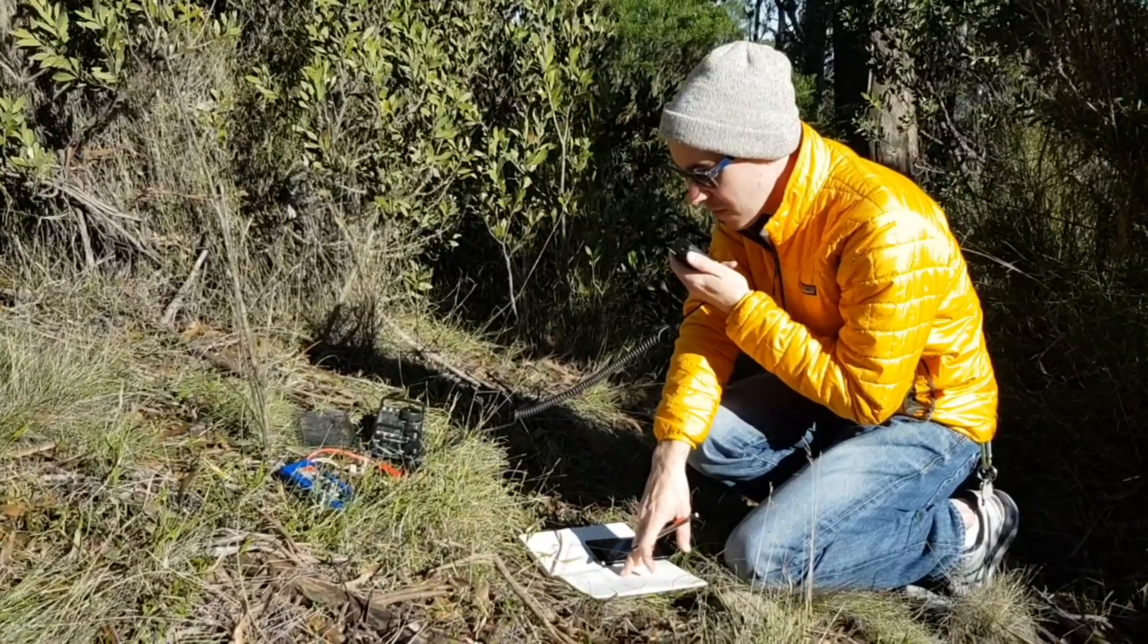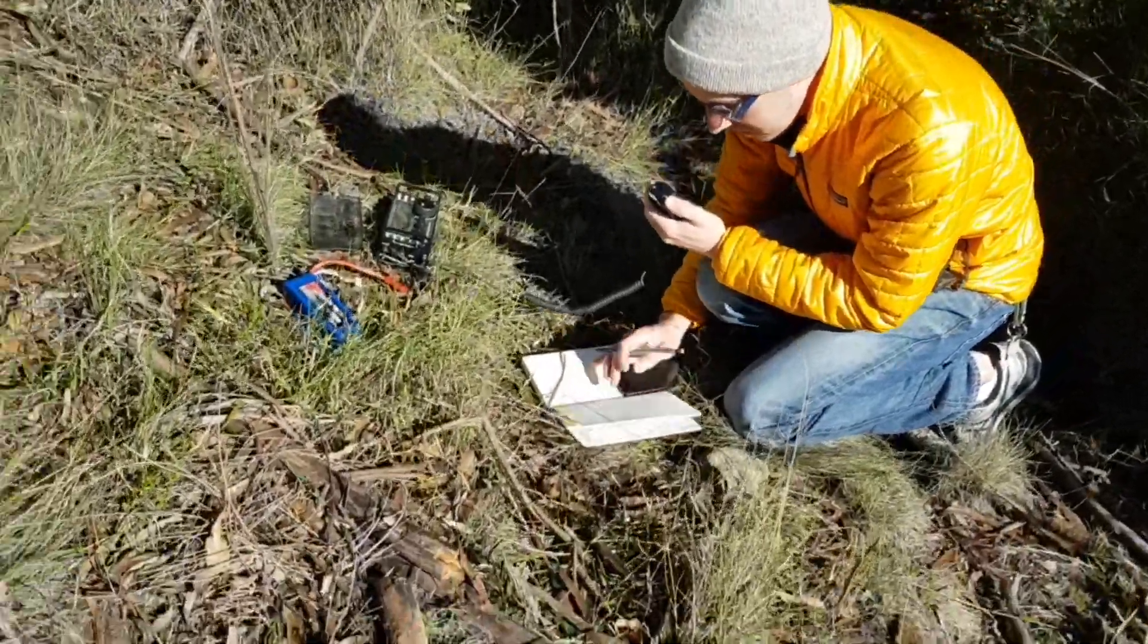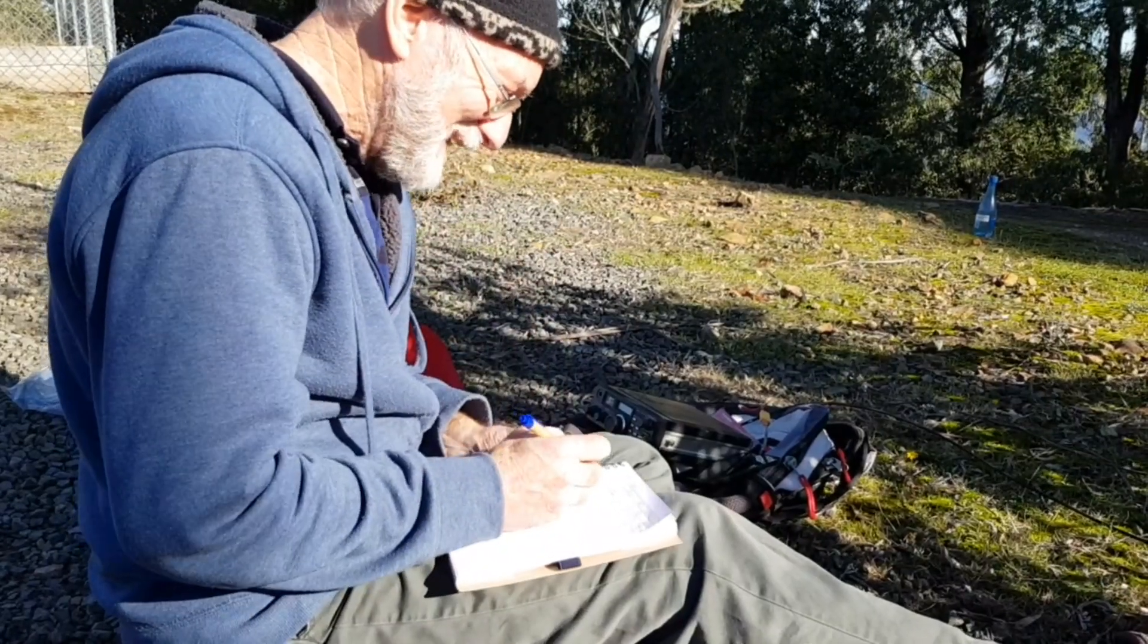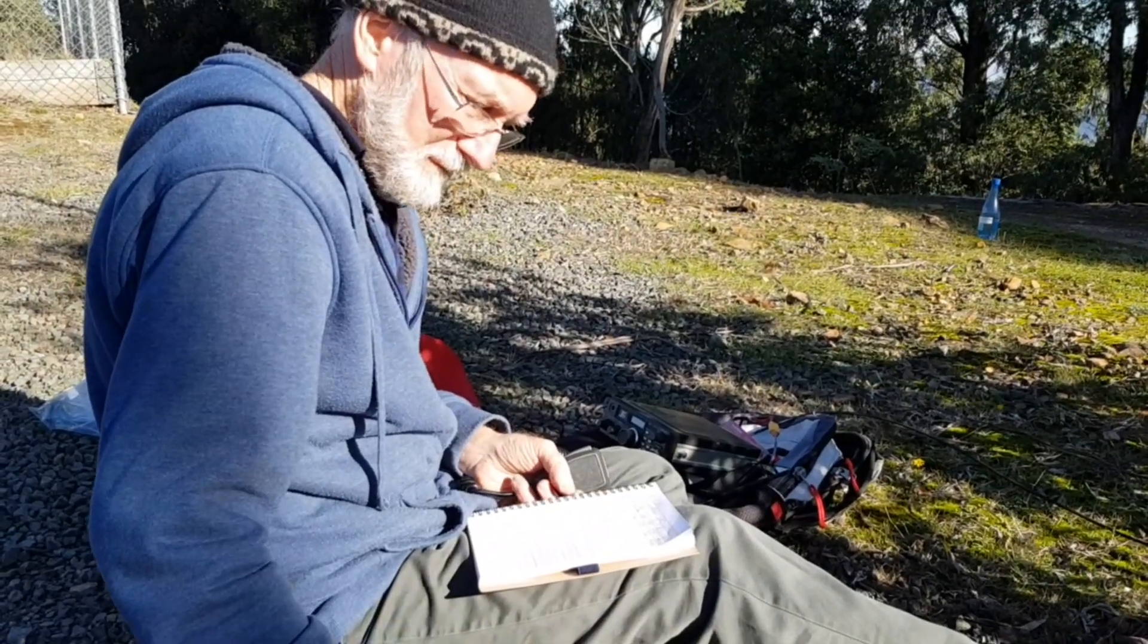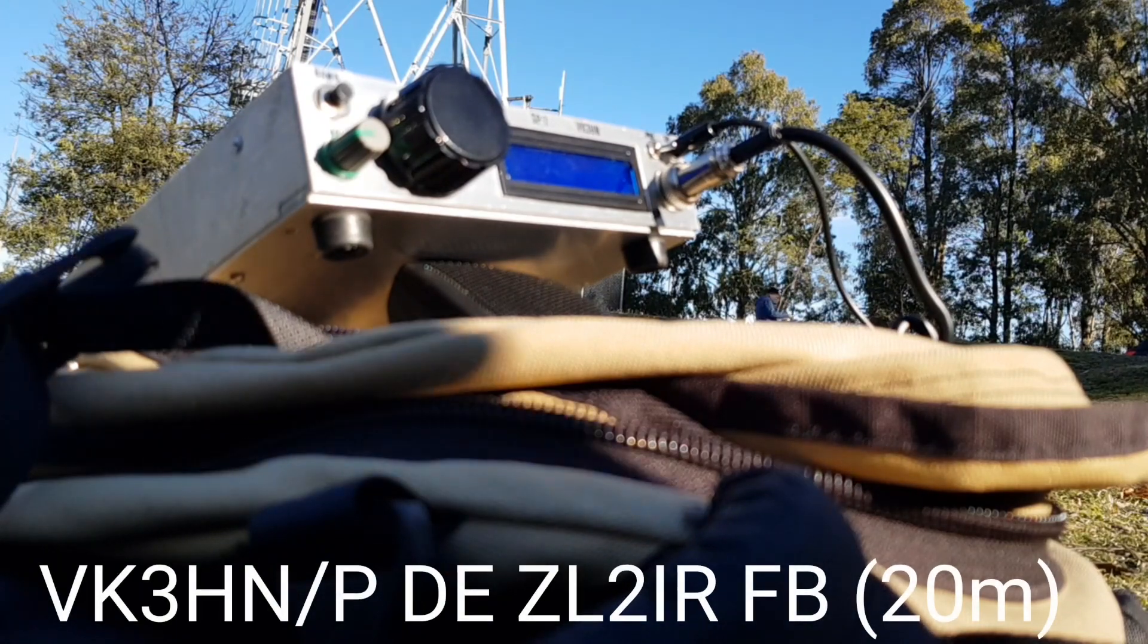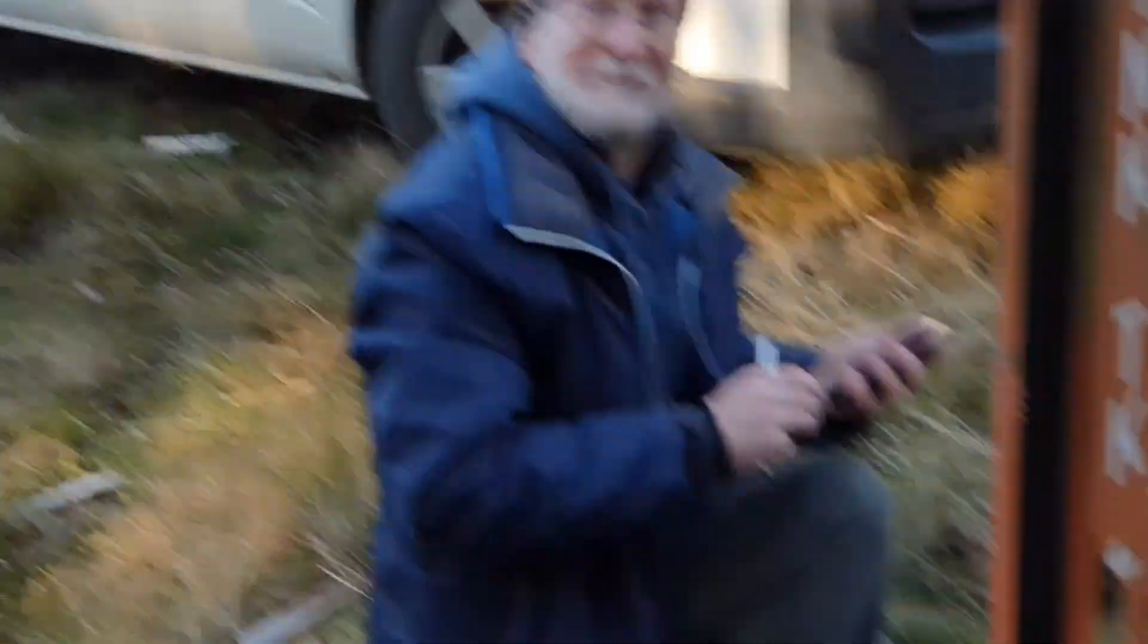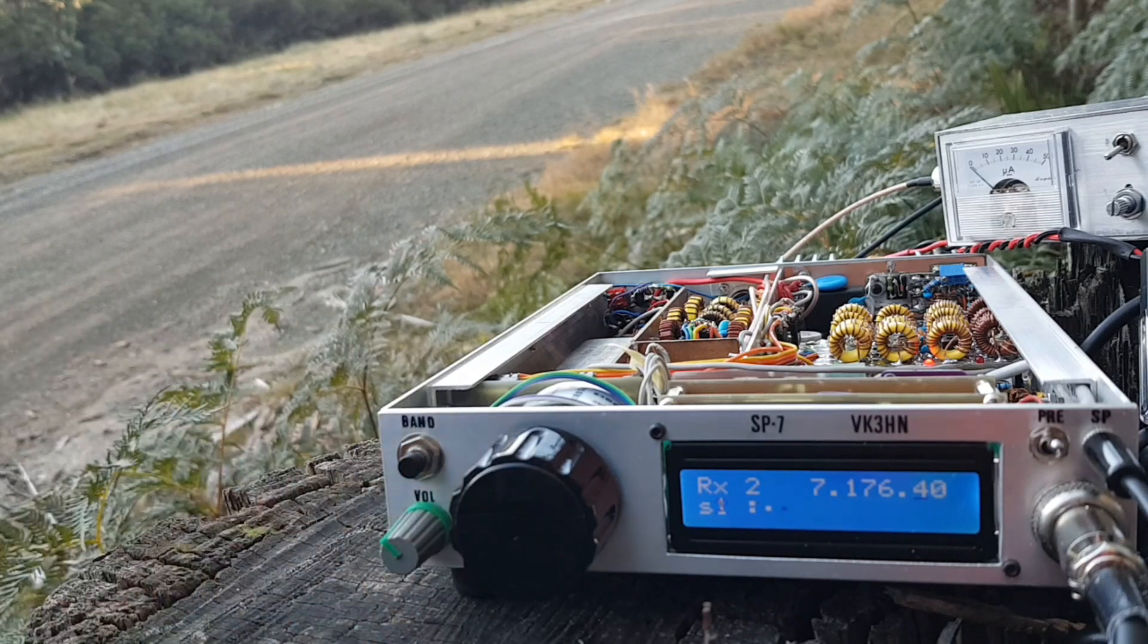VK5 Papa Alpha Sierra, this is VK3 Echo Alpha Romeo. You're five and nine plus some. Very good morning to you. VK3 Delta Alpha Romeo portable. VK5 Echo Alpha Sierra. VK3 Kilo Romeo. VK3 Papa India.